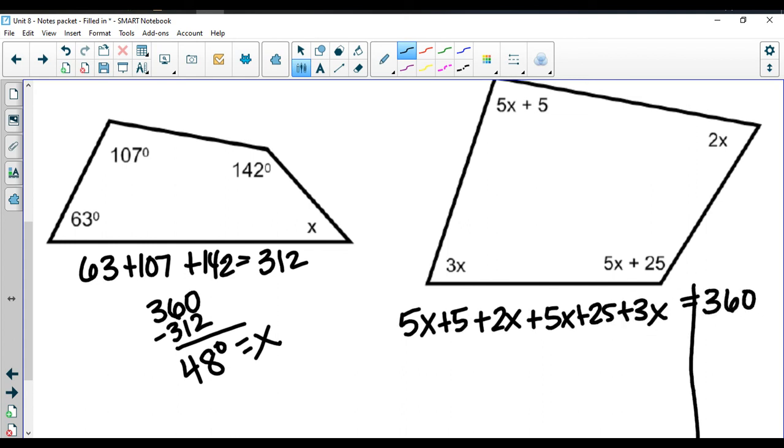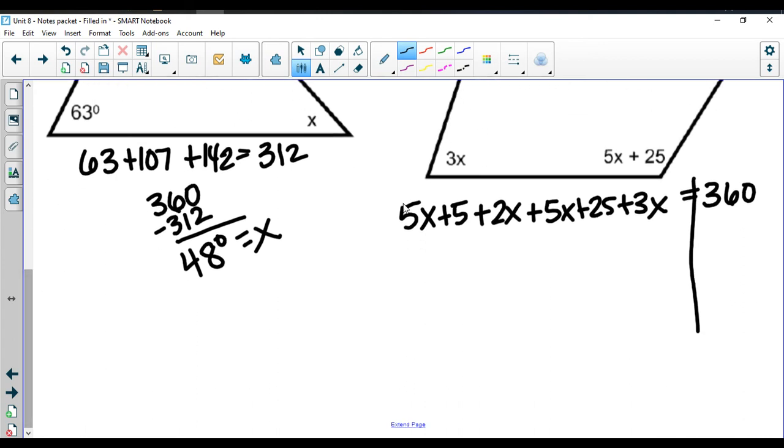So I do have an equation to solve here. Combining my like terms, I get 15x. I have 5 plus 25, so that's going to give me 30, which is equal to 360. Subtracting away the 30 on both sides.